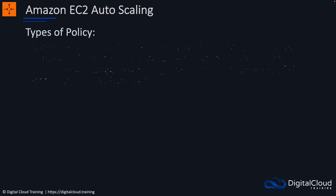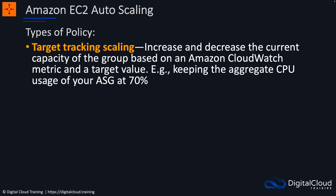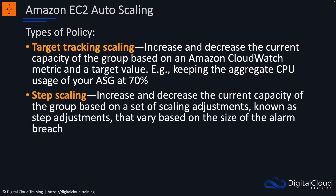Let's look at different types of scaling policies. The first is called target tracking — this will increase and decrease the capacity of your auto scaling group based on a CloudWatch metric and a target value. For example, you might want to keep your aggregate CPU usage at around 70%. If average CPU utilization goes above 70%, the auto scaling group will launch instances, and if it drops below 70%, it will terminate instances to try to keep utilization at that percentage.